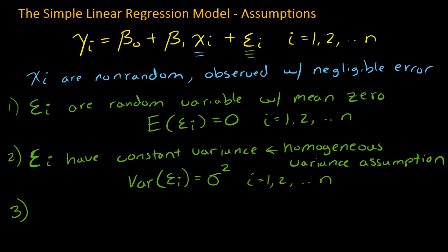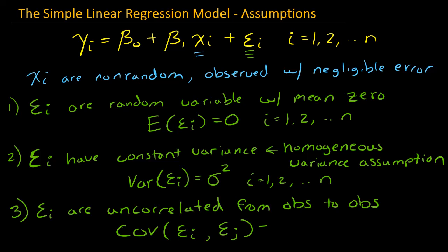And my third assumption is that epsilon sub i are uncorrelated from observation to observation. And the way I can write this is, if they're uncorrelated, that means that their covariance between the ith error term and the jth error term is equal to zero, where i doesn't equal j.